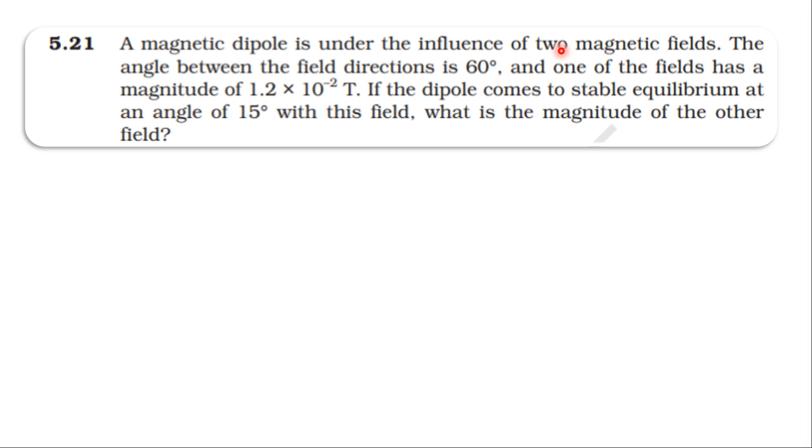A magnetic dipole is under the influence of two magnetic fields. The angle between the field directions is 60 degrees. One of the fields has a magnitude of 1.2 × 10^-2 Tesla. If the dipole comes to stable equilibrium at an angle of 15 degrees with this field, what is the magnitude of the other field?